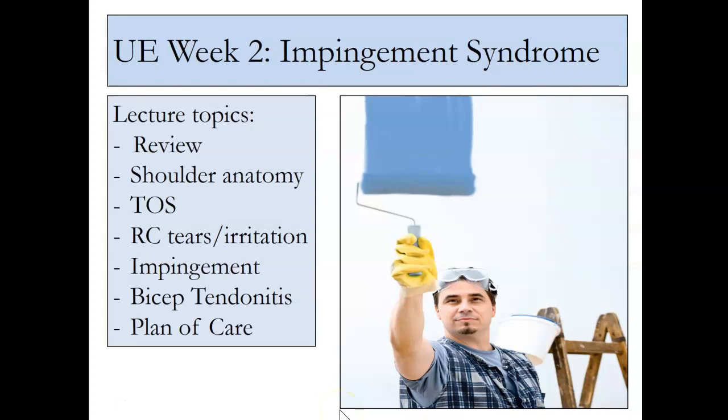This is the week two lecture PowerPoint, all about the shoulder and impingement issues around the shoulder — the space and flow thing that affects so many different shoulder diagnoses. In particular, we're going to review shoulder anatomy first, then look at the thoracic outlet, rotator cuff tears, impingement in general, bicep tendonitis, and then put together a treatment plan to address a lot of these shoulder issues.